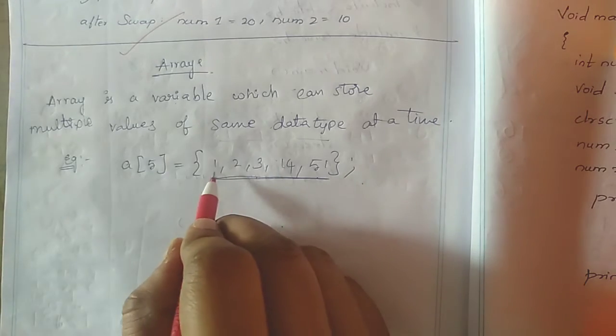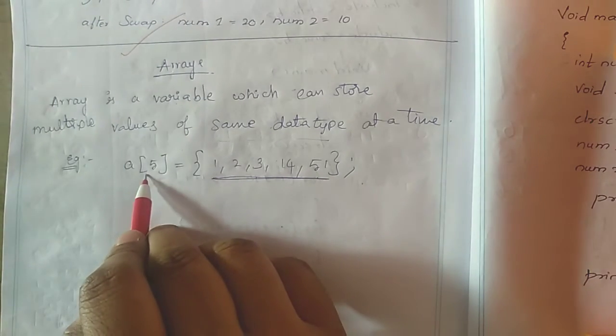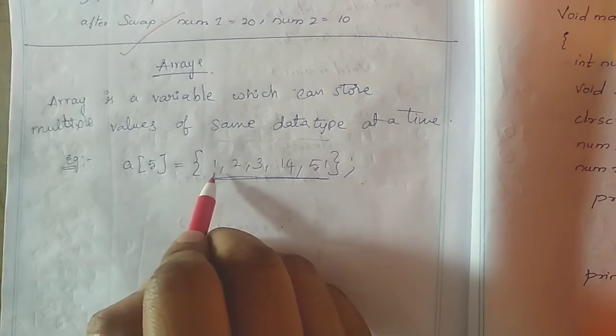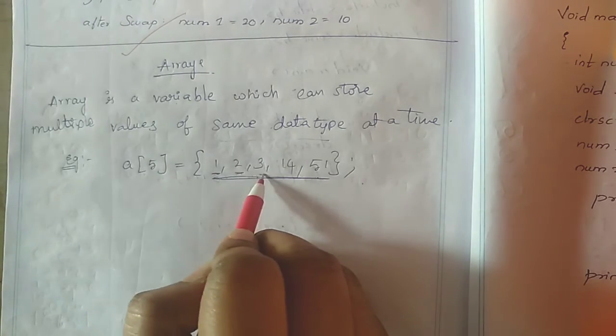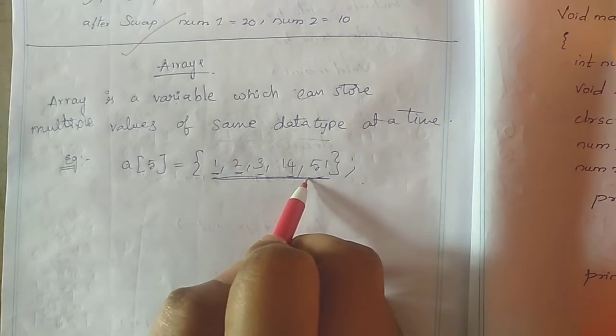It can allow only the same type of data elements. It can store multiple values, but only of similar data type.